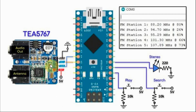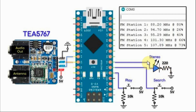A circuit diagram of the FM receiver is shown here. We have the TEA5767 interfaced with the Arduino through the I2C bus, and we have two push buttons — the play and the search — connected to two digital pins. We have the stereo LED indicator connected to another digital pin, and the currently playing station is displayed on the serial monitor, showing the number of the station, the frequency, and the signal level.